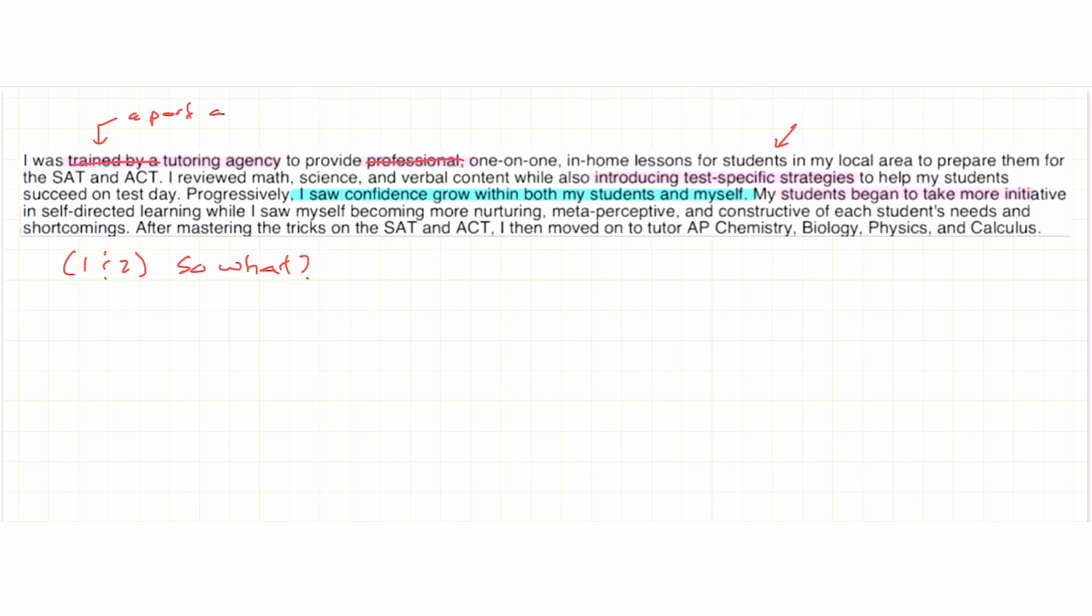And he followed this line up with, my students began to take more initiative in self-directed learning, which makes me think that the growth in confidence was demonstrated by self-directed learning. But self-directed learning doesn't involve you, right? So I want to see a clear connection of how you got them to do the self-directed learning. Did you have some role in the transition to them taking a greater initiative in the self-directed learning? I want to know how. This is not something that just happens magically. And what I want to know is how their nurturing, meta-perspective, and constructivism helped the students.